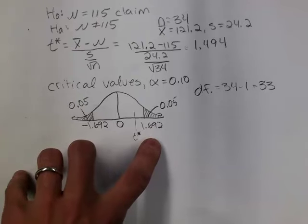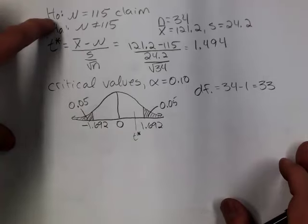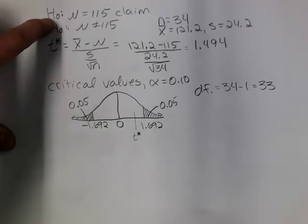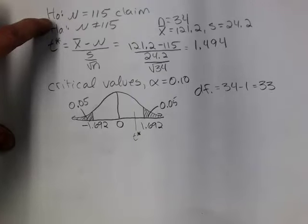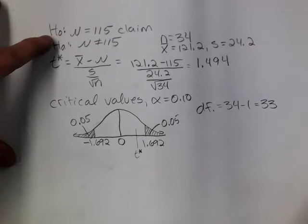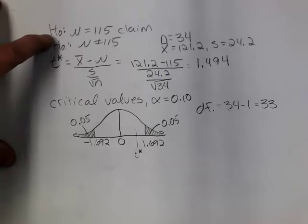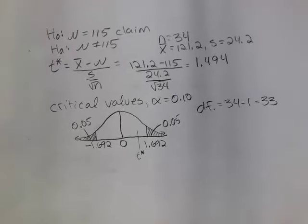The decision is to fail to reject the null. If I'm failing to reject the null, and in this case the null is the claim, then I am supporting the claim. There is enough evidence to support the oceanographer's claim that the mean dive depth of a North Atlantic right whale is 115 meters.